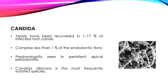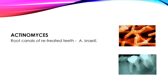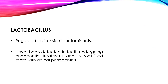Candida species have been recovered in 1–17% of infected root canals and are seen in persistent apical periodontitis. The most frequently isolated species is Candida albicans. Actinomyces is seen in root canals of retreated teeth — typically Actinomyces israelii. Lactobacillus is regarded as a transient contaminant, and its role in infection of the root canal is still not fully determined; it has been detected in teeth undergoing endodontic treatment and in root-filled teeth with apical periodontitis.